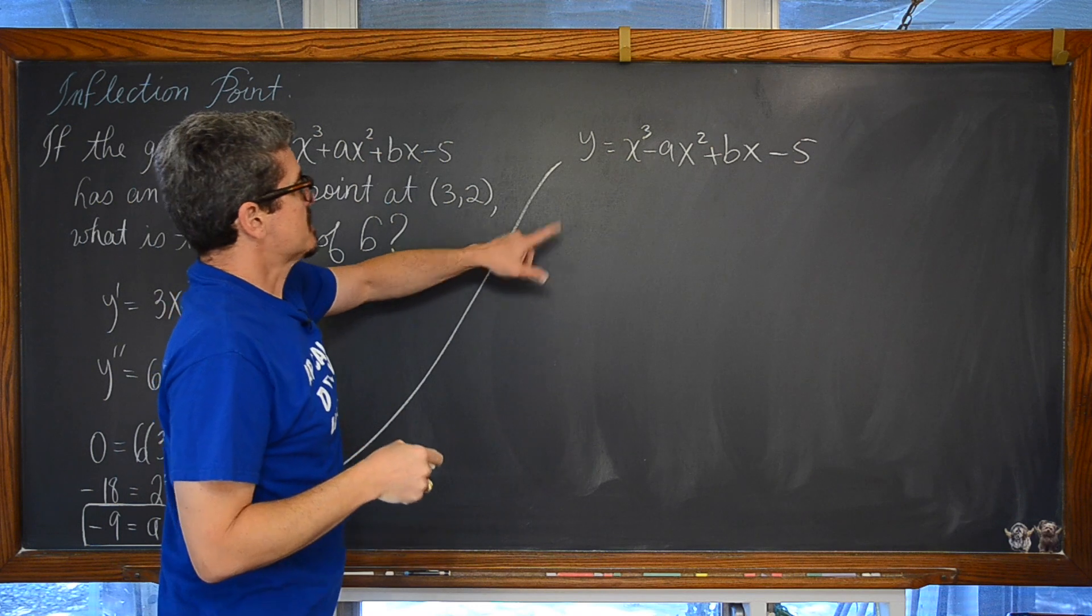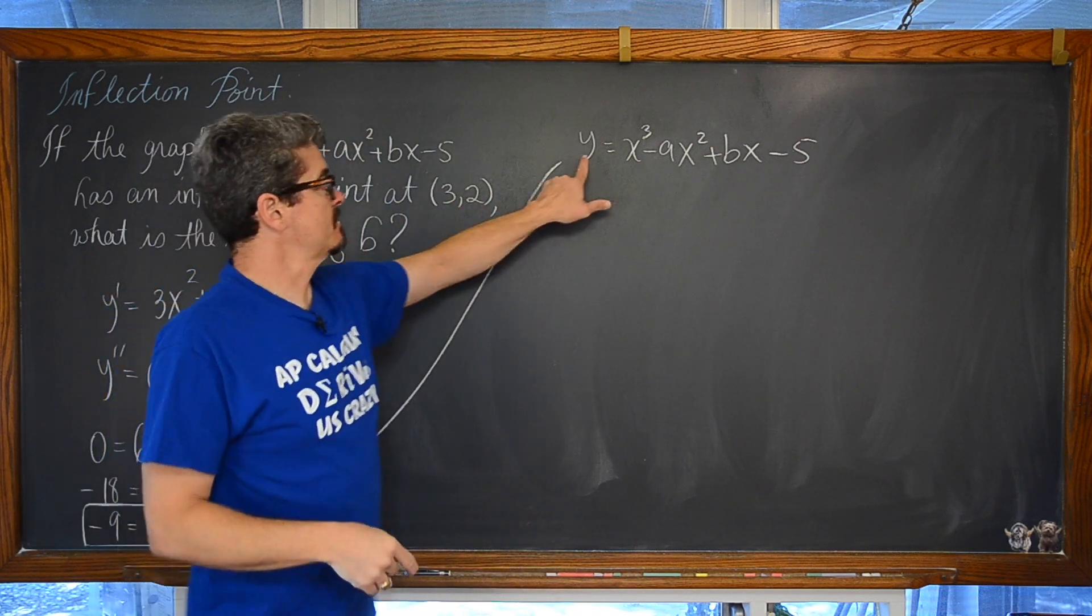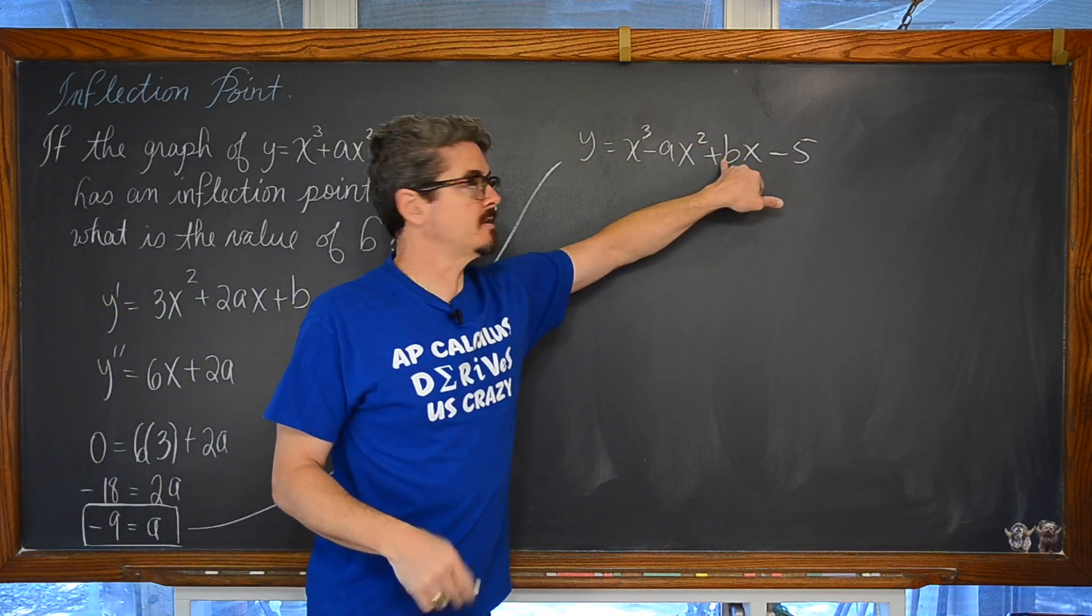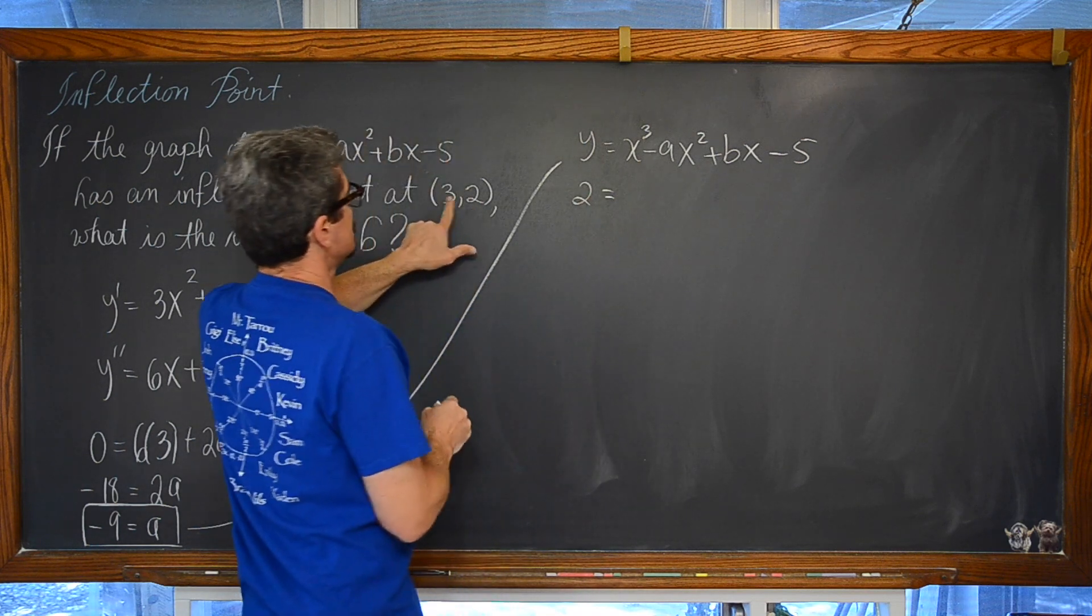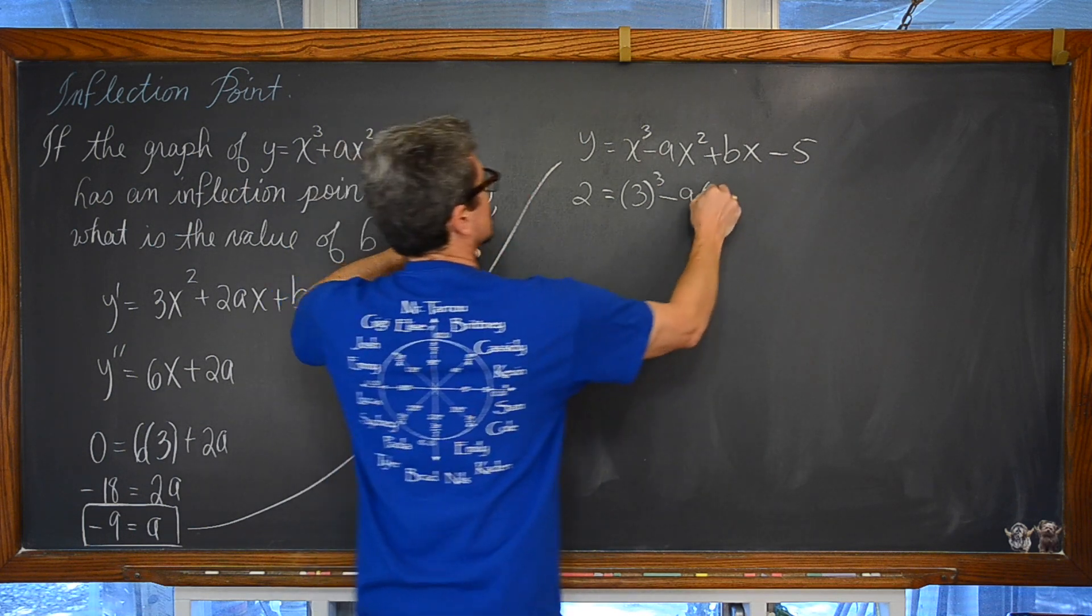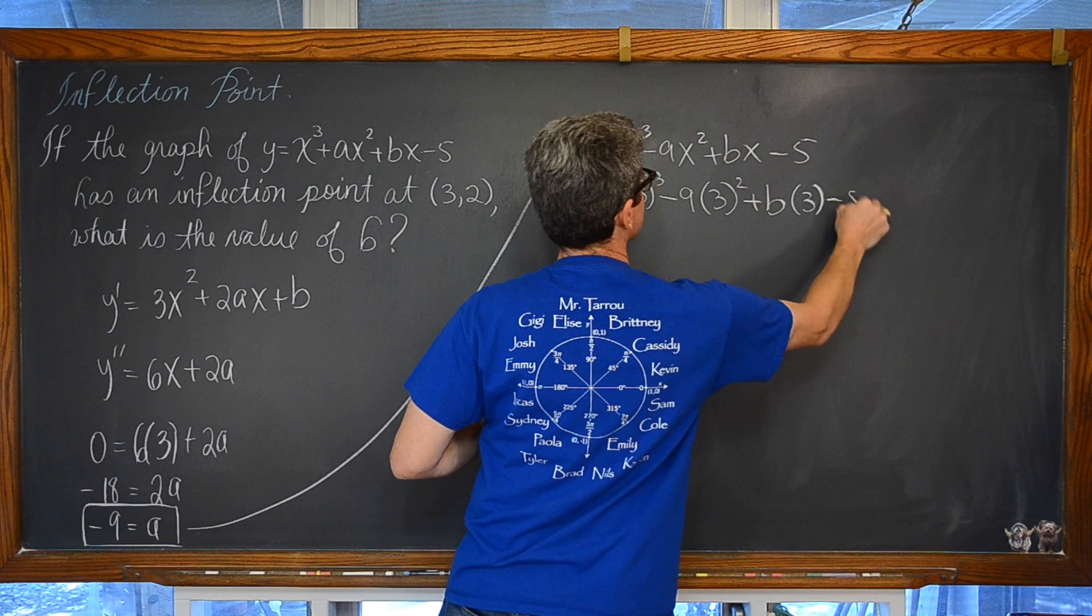Here is an equation that is asking for a value of x. We have that, it is 3. It is asking for a value of y. We've got that, it is 2. And if we plug those values in, the only thing left is b. So y, which is 2, is equal to x, which is 3 cubed minus 9 times 3 squared plus b times 3 minus 5.